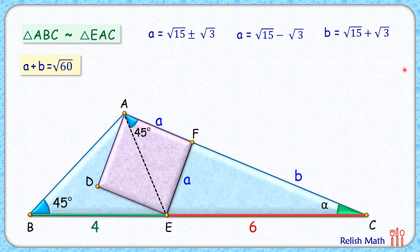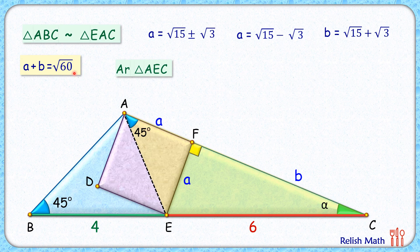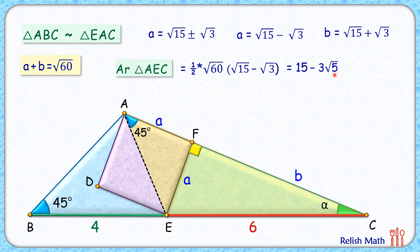Now let's find the area of triangle AEC. Area equals half of base times height. The base is AC and since angle F is 90°, the height is EF, which equals a. So area of triangle AEC = ½ × (a + b) × a = ½ × √60 × (√15 − √3), which simplifies to 15 − 3√5 cm².